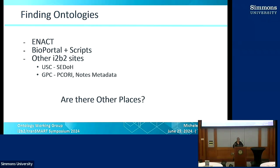Mark Abadjian and the USC team created SDOH — social determinants of health and environments ontologies. GPC has a series of ontologies that can be shared; they have ACT ontology over PCORI, and they've also provided a notes metadata ontology that we're probably going to use in the ENACT network. We need a way to collect those and make it easy for sites to take advantage of them so that everybody's not reinventing the wheel.